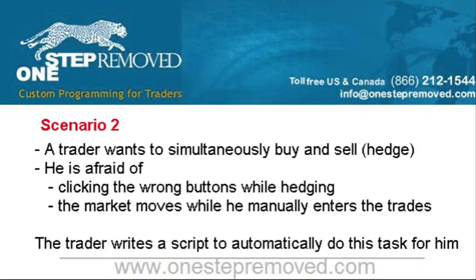One way to reduce the risk — and the strongest advantage would be to reduce the risk of error, where he clicks buy twice or clicks sell twice — would be to write a script. That trader could drag the script onto the chart he wants to hedge, the script will buy and sell, and it's done. All he has to do is choose an input for the lot size, and for the stops if he wants to. He pushes okay, it buys and sells, and it's done.